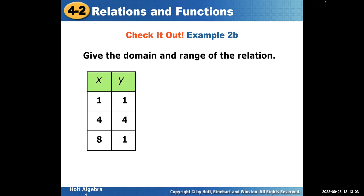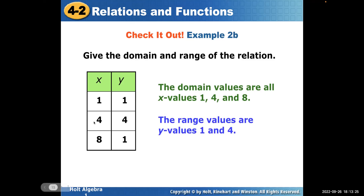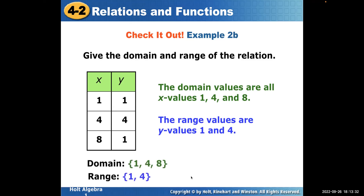Here's another example with just points — no line is drawn. The domain is {1, 4, 8}. For range, notice two of the Y values are 1, but you only need to write it once. So the range is {1, 4}. If you have anything repeating in either X or Y, write it down only one time.